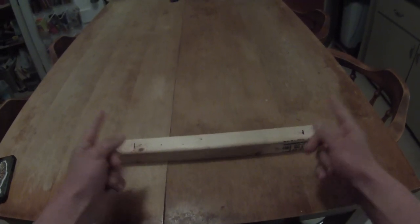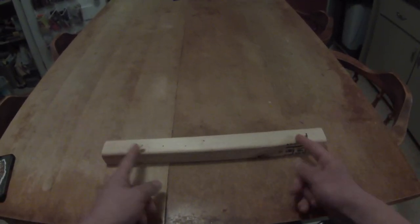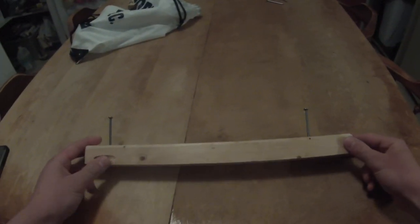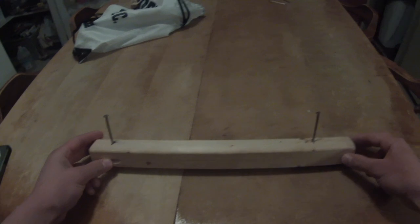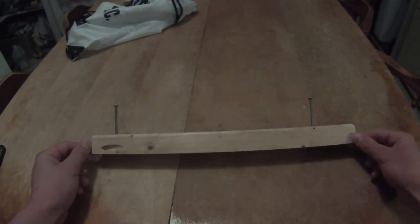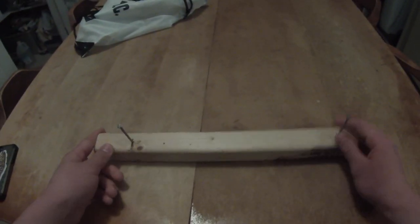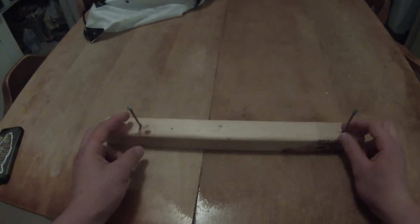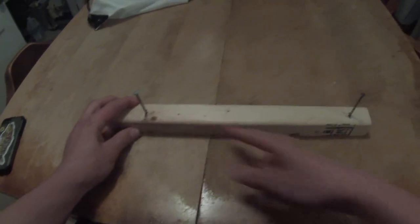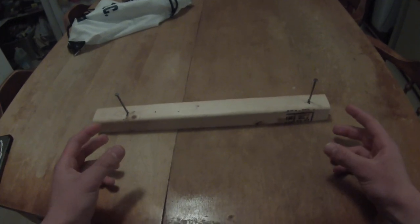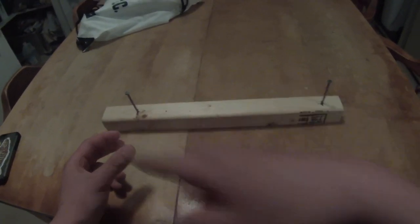Alright, so what I've done is I've taken two nails and put them right on the marks I made that are 12 inches apart. They're not really at an angle but it doesn't really matter. So the reason I put them 12 inches apart is so that every time you wrap your line around these two nails it'll be a foot.